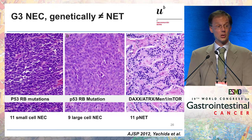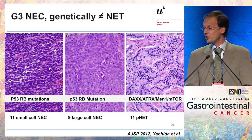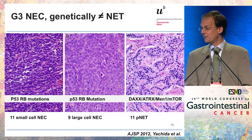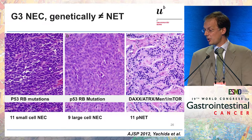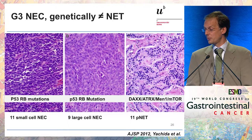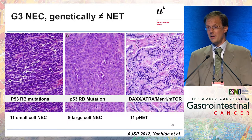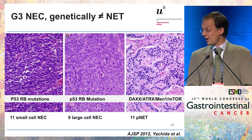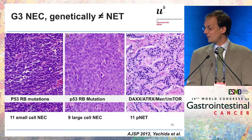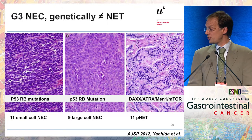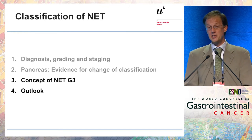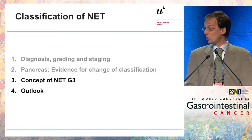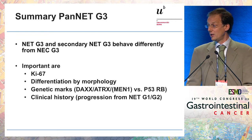We have known for many years that poorly differentiated NEC G3 are genetically different from NET. Already in 2012, it was described that large cell and small cell neuroendocrine carcinoma harbor P53 and RB mutations at very high frequency — around 80% — whereas pancreatic neuroendocrine tumors have DAXX, ATRX, MEN1 mutations, or mutations of the mTOR pathway. Out of this evidence, with other groups having shown the same, the concept of neuroendocrine tumor G3 arose.